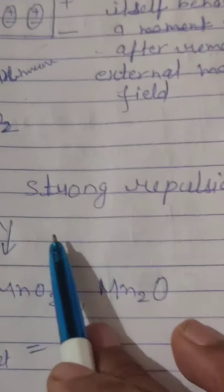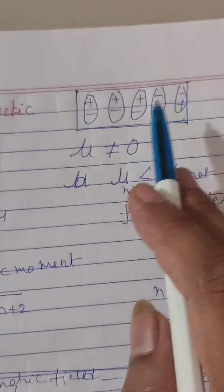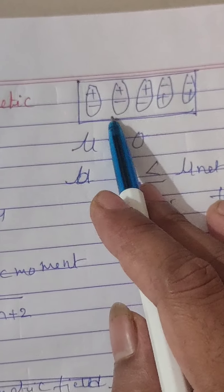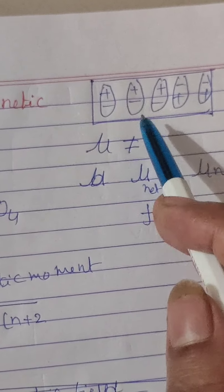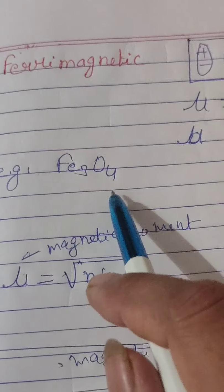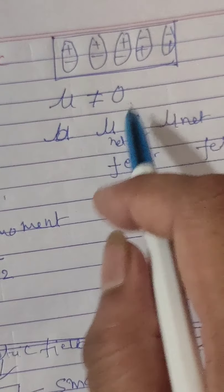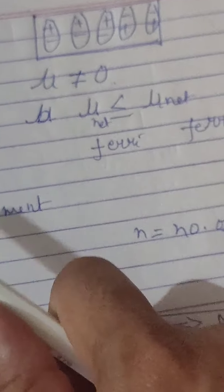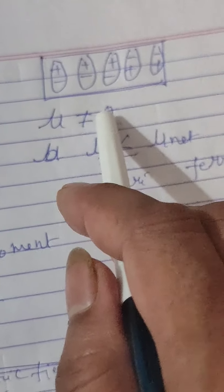In anti-ferromagnetic materials, the net dipole moment is zero. For ferrimagnetic materials, the example is Fe₃O₄. The dipole moment is not equal to zero, but it is less than ferromagnetic materials. So the net dipole moment in ferrimagnetic is greater than zero but not as large as ferromagnetic.